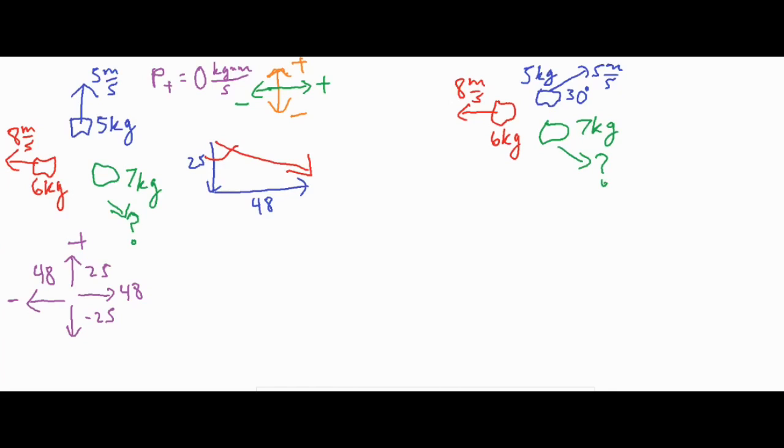So if we just use the Pythagorean theorem, a squared plus b squared equals c squared, then we have 25 squared plus 48 squared, square root that, and that's going to give us our hypotenuse of the triangle, which comes out to 54.12. So now we have our final momentum of our green object. If we take that final momentum of 54.12 and set it equal to m times v, the m is 7 kilograms.